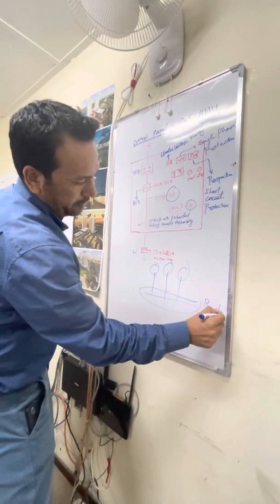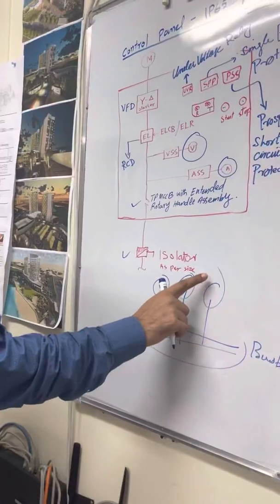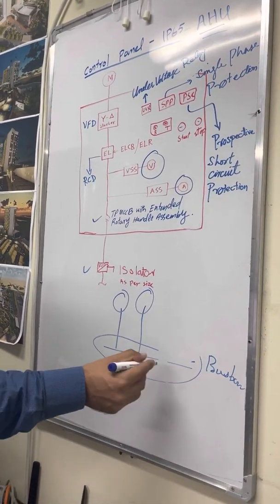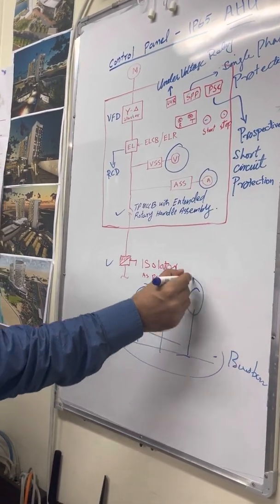Bus Bar. More than 2, okay, normal cables and these things. But if more than 2 then it should be Bus Bar. It's the Regulation in ADDC.